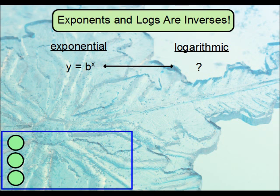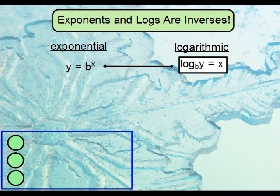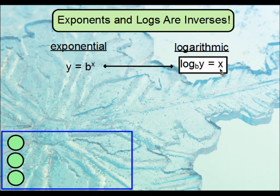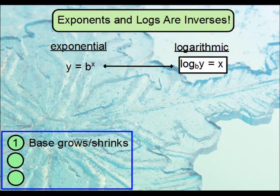Logarithms and exponents are actually inverses of one another. So if you have y is equal to b to the power of x, the log, like exponents, is also going to have its own base. It will be written as the log of y base b is equal to x. Note that the base b here is small for logarithms. Typically with exponents, the base is the big one and the exponent is the small one. Here, the base is the small one and the exponent is big.